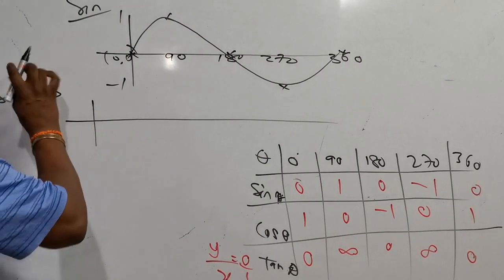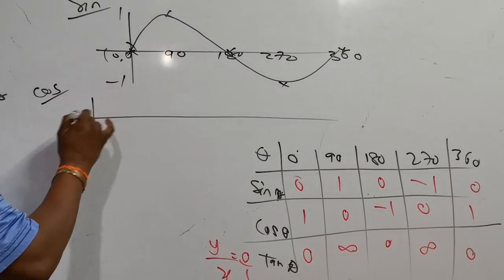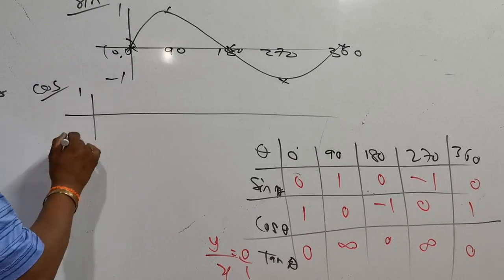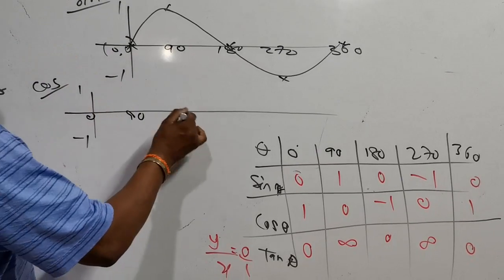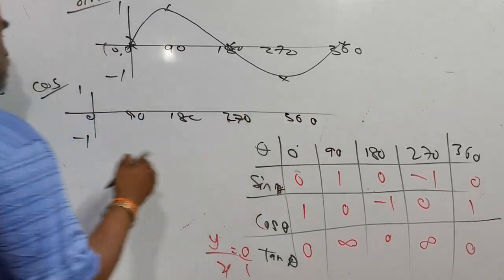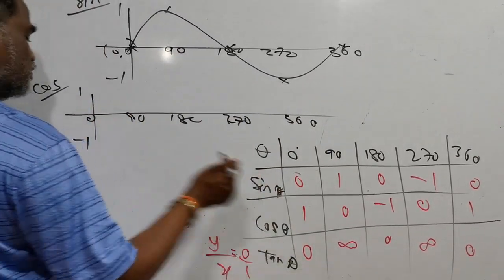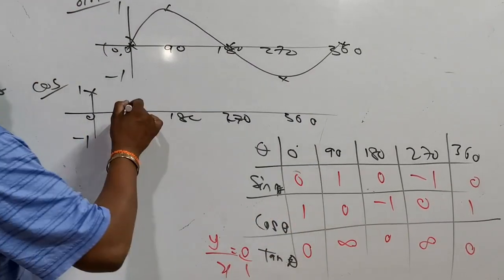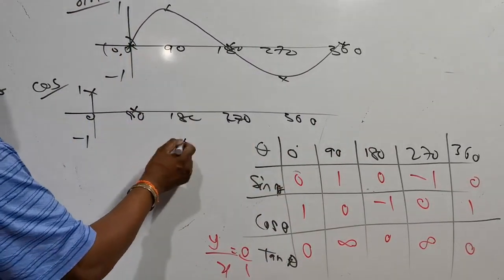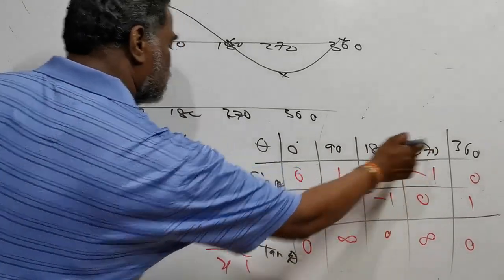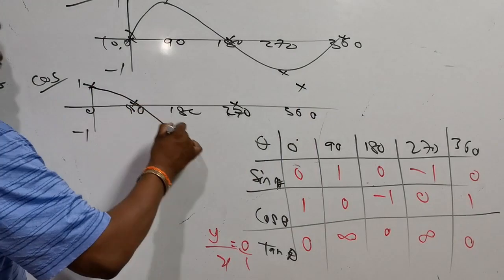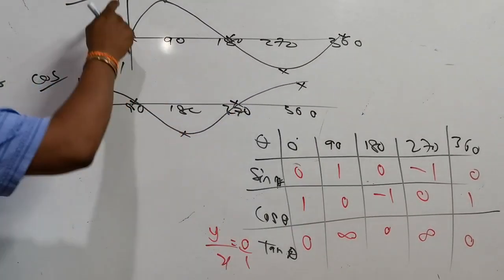For the cosine graph, the same concept applies. At 0° cos = 1, at 90° cos = 0, at 180° cos = -1, at 270° cos = 0, at 360° cos = 1. Maximum is 1, minimum is -1. That's why the cosine graph starts at 1 and forms a wave — this is the cosine graph.